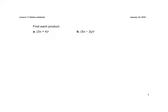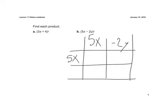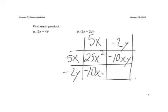And if we look at this next one, I could set it up using the box method if I wanted to. And so I'd have 5x minus 2y and 5x minus 2y. And then 5x times 5x is 25x to the second. 5x times negative 2y would be a negative 10xy. Negative 2y times 5x, again, would be a negative 10xy. And then negative 2y times negative 2y would be a positive 4y to the second.